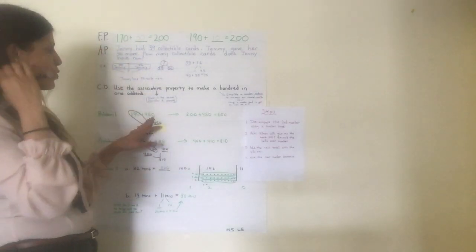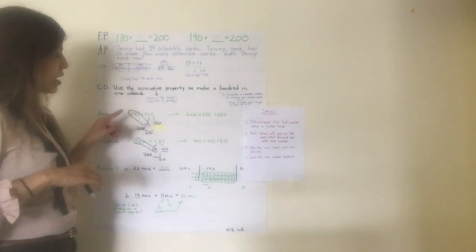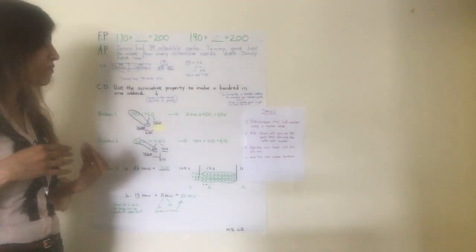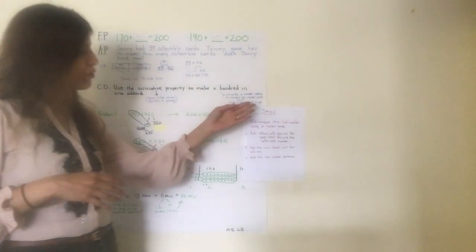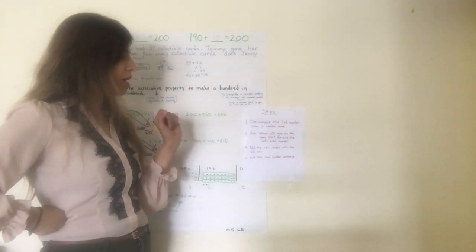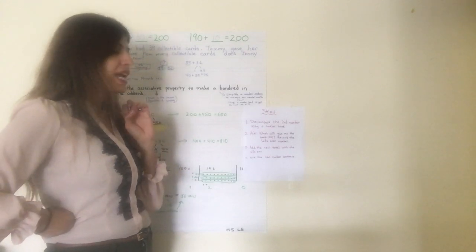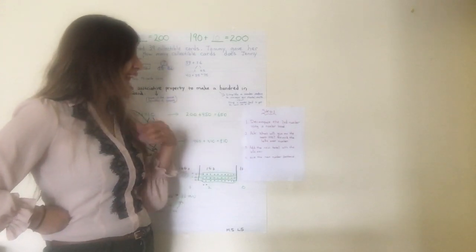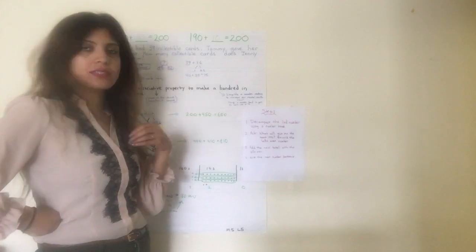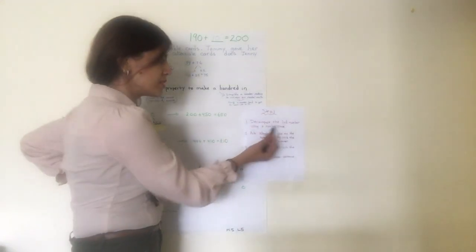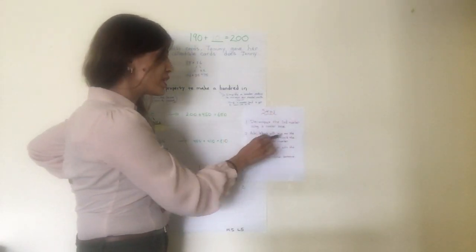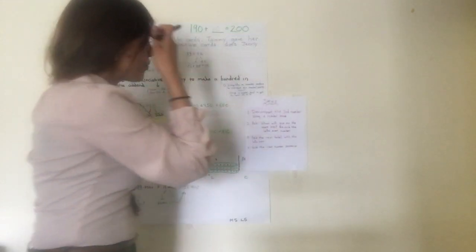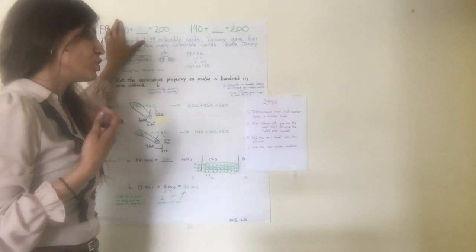So let's look at problem number one: 190 plus 460. When you look at this number sentence originally, it might look quite complex, but we can simplify this problem. Here are the steps — please screenshot or take a picture of this chart. Step 1: decompose the second number using a number bond. Step 2: ask, what will give me the next hundred? Record the leftover number. Step 3: add the new total with the leftover. Step 4: write the new number sentence.